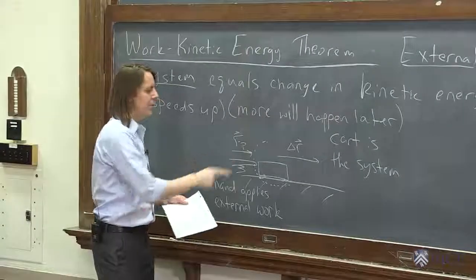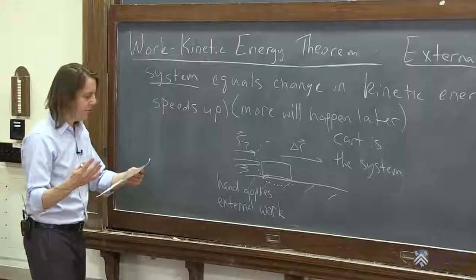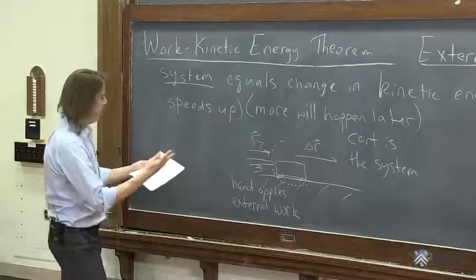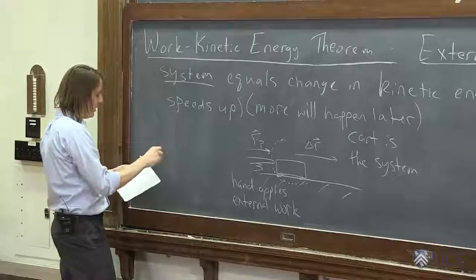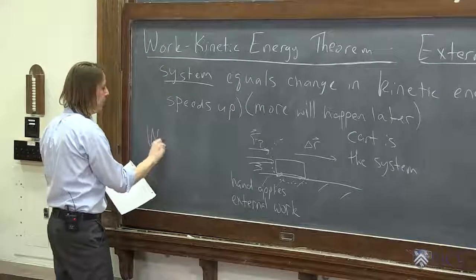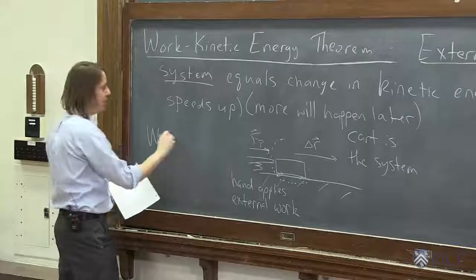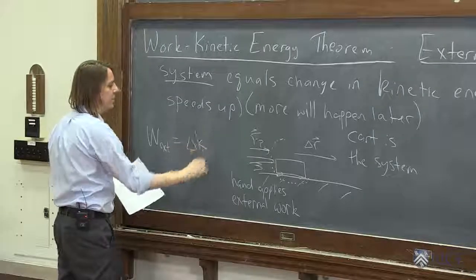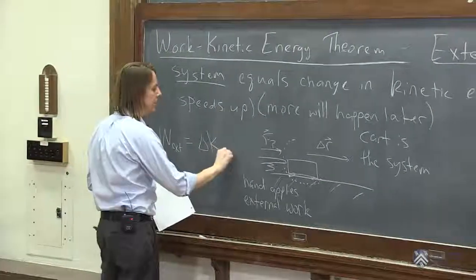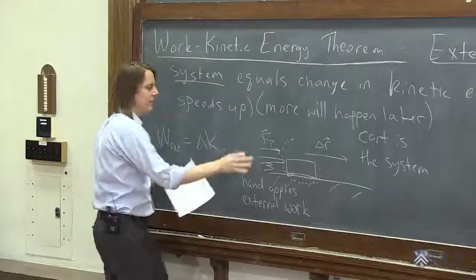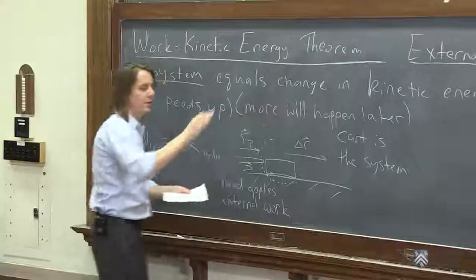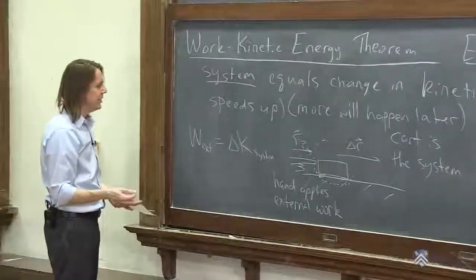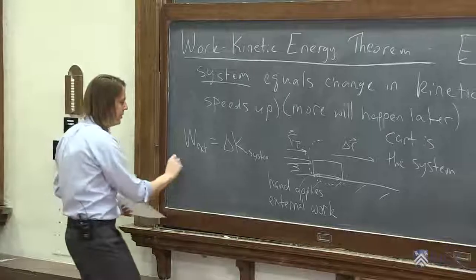We have a system. I applied work to it. Let's see, then, what is a mathematical expression, then, of the work kinetic energy theorem. It is that the work external that I applied with my hand equals delta K of the system. That's really all it is. If you have a system, something comes in and does work, of course, as you would expect, the kinetic energy is going to increase.